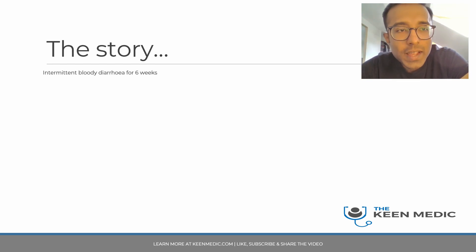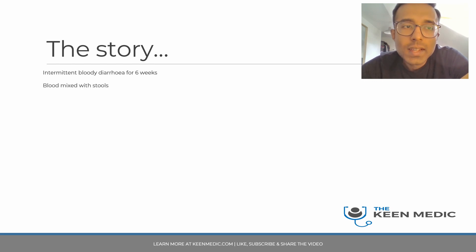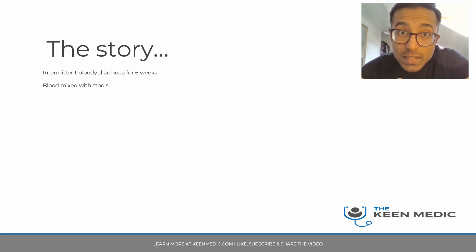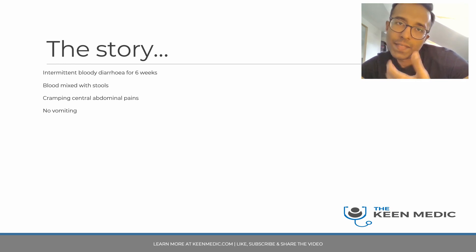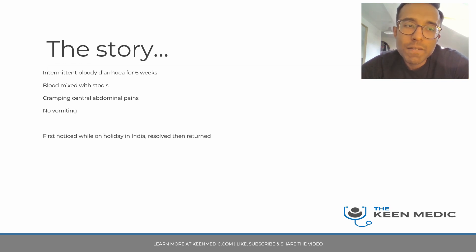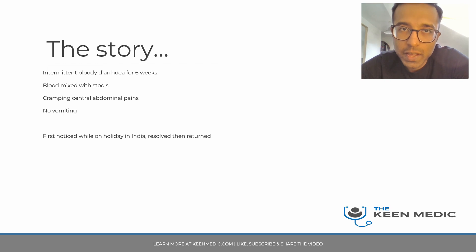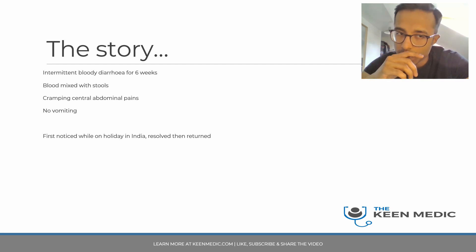Here's the story: he has had intermittent bloody diarrhea for the last six weeks — not constant — with the blood mixed in with the stool. He's also had cramping central abdominal pains for this period, coming and going like the bloody diarrhea, but no vomiting. He first noticed this while on holiday in India; it resolved on its own and then came back. So it's intermittent, and he has clearly travelled to India, which is a high-risk area for things like TB.